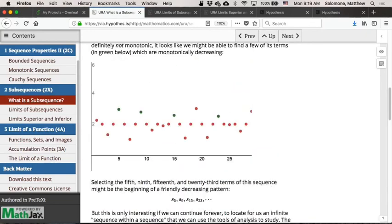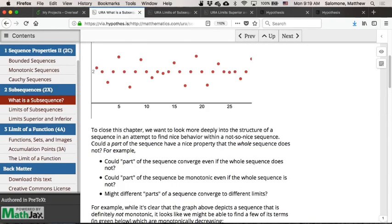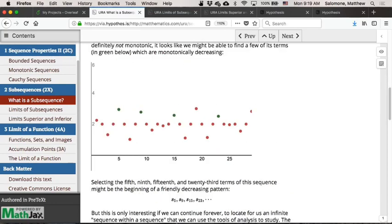So to come back to this example for a second, if my red sequence is my parent sequence, so here's S1, S2, S3, S4, S5, S6, and so forth. Then the green highlighted terms here are the first four terms in a subsequence.